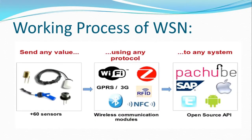In this slide we will discuss the working process of a wireless sensor network. First, there are a lot of sensors, and wireless communication modules are also required for communication between sensor nodes. We can use GPRS, Edge, 3G, 4G, RFID, Bluetooth, or any type of wireless communication medium. We also need a system — there are lots of open source APIs which are used for monitoring sensor data.